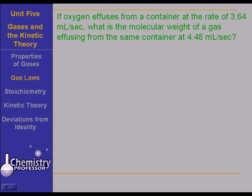If oxygen effuses from a container at the rate of 3.64 milliliters per second, what is the molecular weight of a gas effusing from the same container at 4.48 milliliters per second? Stop for a minute and be logical. Oxygen is effusing at 3.64 mL/s; this other gas effuses at 4.48 mL/s. The other gas is effusing more rapidly. What does this tell you about the molecular weight of the other gas compared to oxygen? The other gas is effusing more quickly, so you would logically deduce that the other gas is going to have a lesser molecular weight.